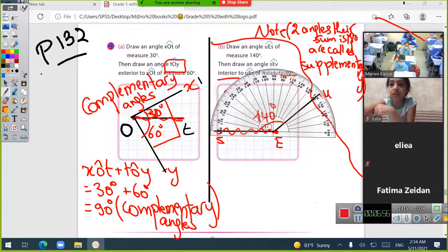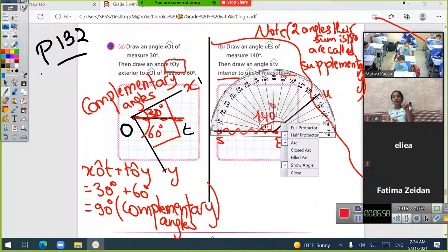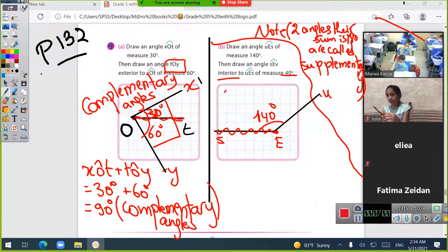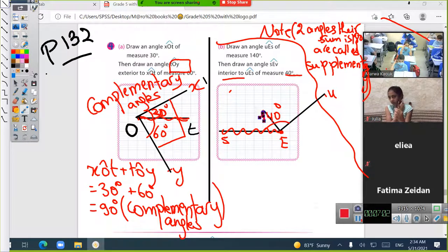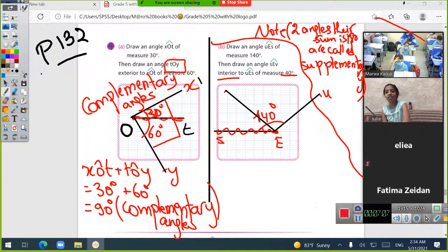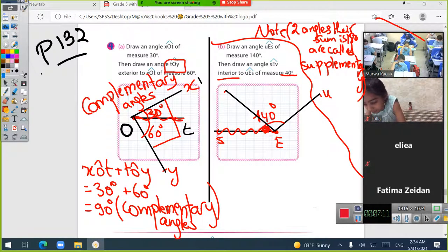Here we are, 40 degrees inside it. Pay attention to my question now: when I have a big angle of 140 and I draw another angle inside it of 40 degrees, what's the remaining angle?